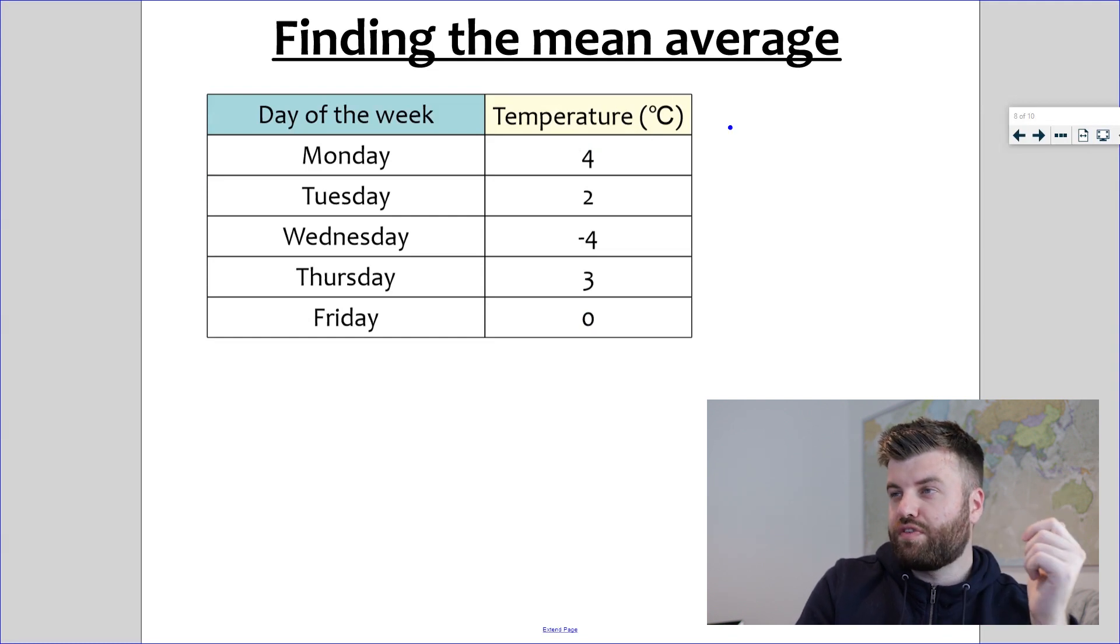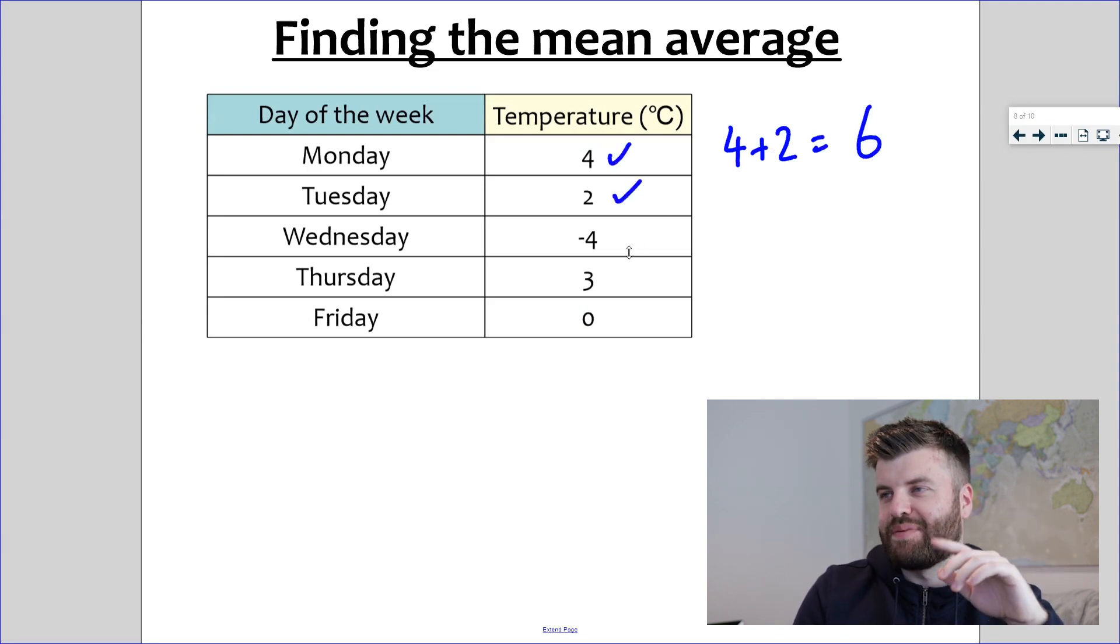On the board you'll see a table now. This table has days of the week: Monday, Tuesday, Wednesday, Thursday, Friday. And each day has a temperature recorded. So you know step one, we've got to add up all of these data points. So four plus two is six, we're on six. I've done these two. I'm going to skip the negative number for now. Plus three is nine. Okay, so I've done these three. Plus zero, well that's just still nine, right? So I'm going to add zero, which is not really doing anything, but I'll take it off.